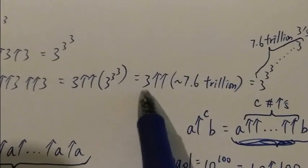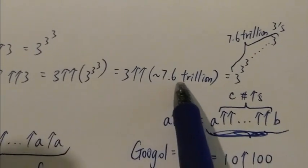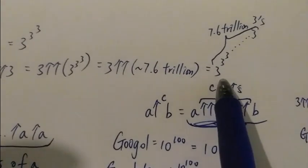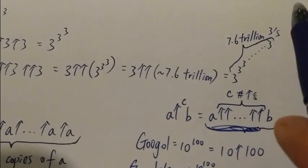And this number is a very big number. It equals to 3 double arrow 7.6 trillion, which is equal to a power tower of 3 with 7.6 trillion threes in it.